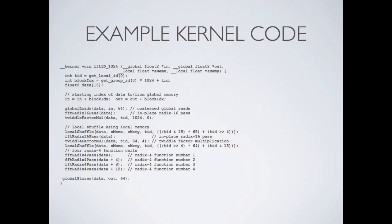Here we see some example code. This is one of the examples provided with OpenCL, and you can also see it on Wikipedia as an example of OpenCL code. This is a Fast Fourier Transform. As you look at the function, all the code executes within a single function. You have an input and an output — those are the parameters to the kernel. You can see this is all very C-like, and even the threading — the TID — tells you which thread you're dealing with.